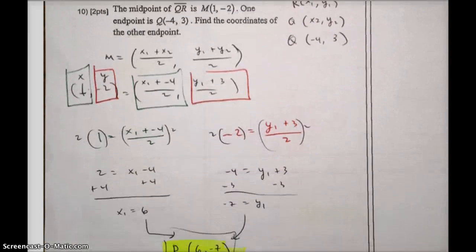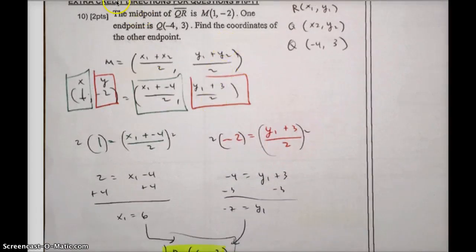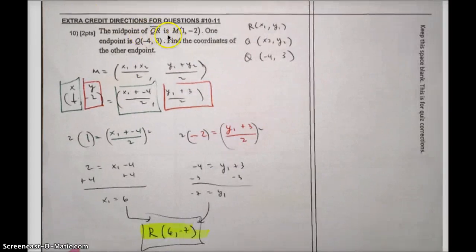The extra credit question says the midpoint of QR is M at (1, negative 2). One endpoint is Q at (negative 4, 3). Find the coordinates of the other points. So essentially, they've given you the midpoint, and you have to find that other coordinate. So I gave Q to be X2, Y2, which is negative 4, negative 3, and our R value, which we are trying to solve for X and a Y. When you put it in there, you'll notice that you're solving for an X here and a Y here. And you can just multiply both sides by 2. Add 4, and you get your X value to be 6. Multiply by 2, and your Y value to be negative 7.